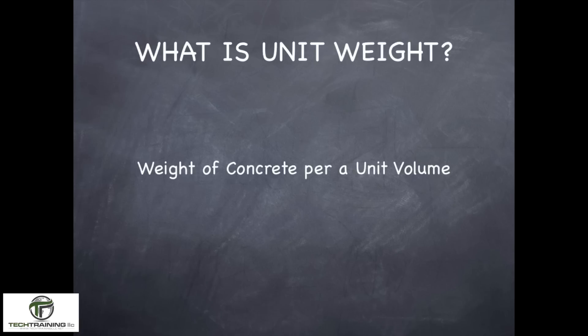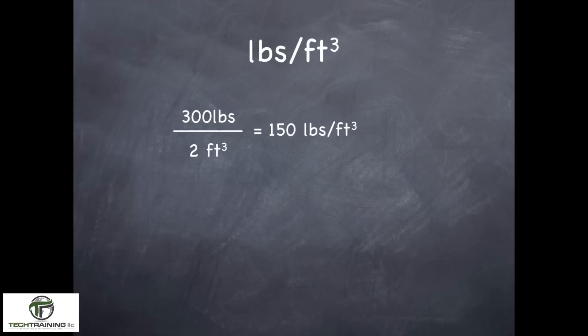So what is unit weight? Unit weight is the weight of concrete per a given unit volume, in this case pounds per cubic foot. One of the goals of these standards is to make sure that everybody reports in the same units, so here we're always going to report in pounds per cubic foot. As an example, if somebody had a two cubic foot bucket in the field, they'd weigh up 300 pounds of concrete, yet their unit weight or density would be 150 pounds per cubic foot.